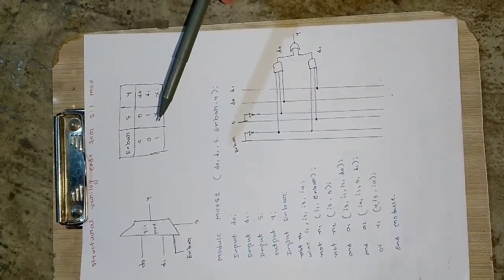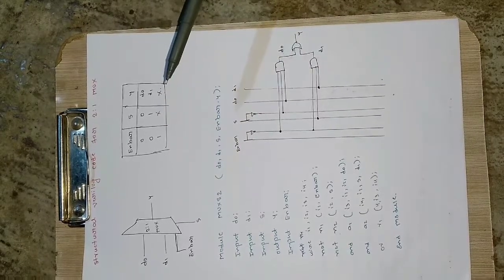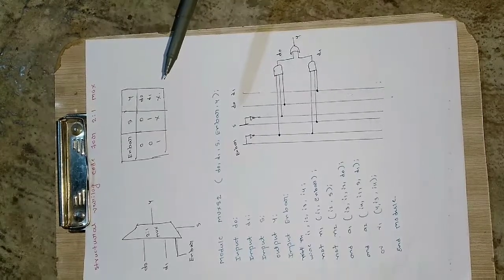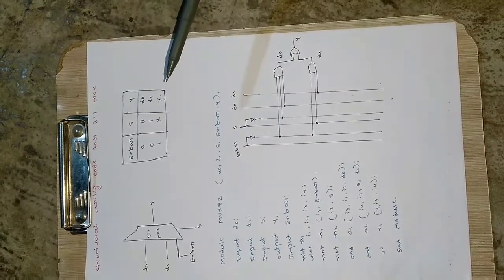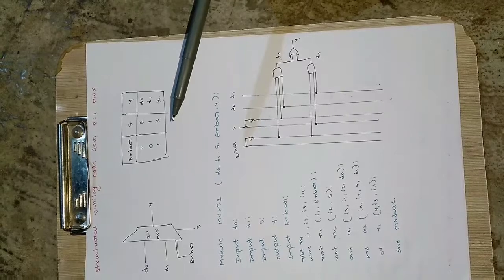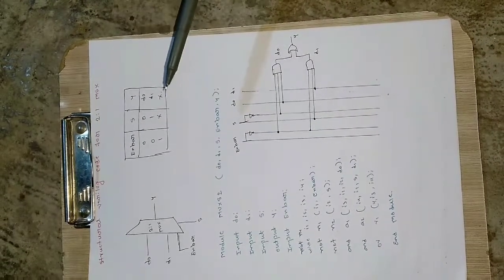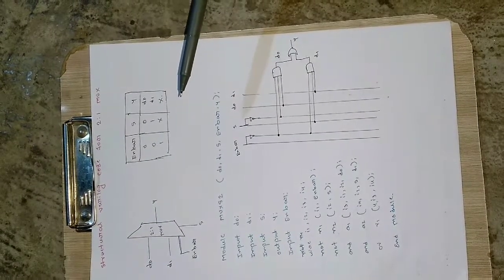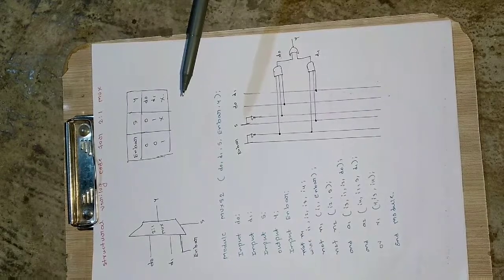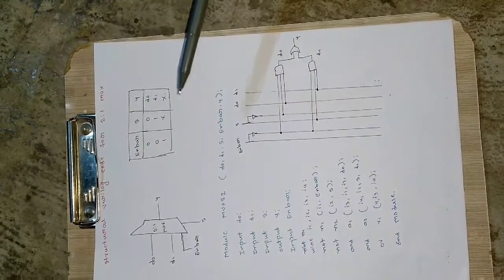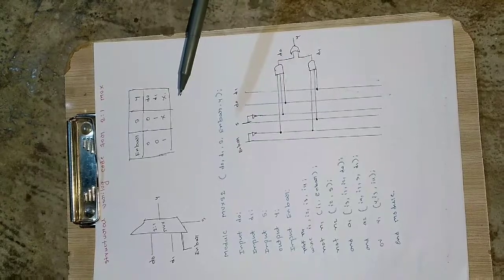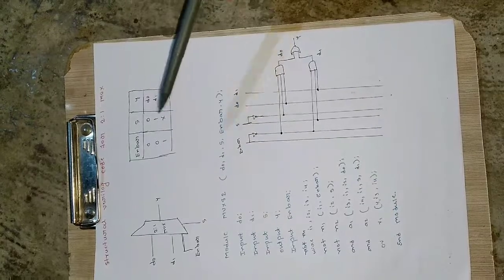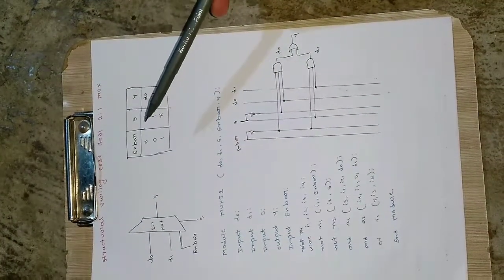A 2-to-1 mux has two inputs d0 and d1 and one select line s. If the value of s is equal to 0 the output will be d0, and if it is equal to 1 the output will be d1. We also have a pin called enable bar which is generally active low. Whenever the value of enable bar is 0 the mux will be operational, and if enable bar becomes 1 the mux will be inoperational — in the off state.